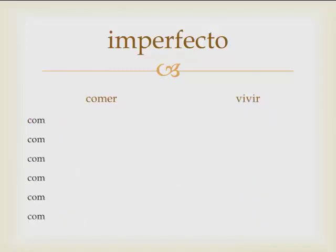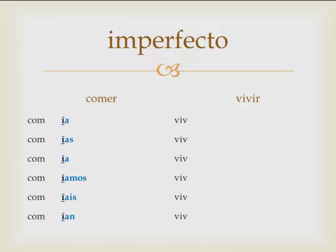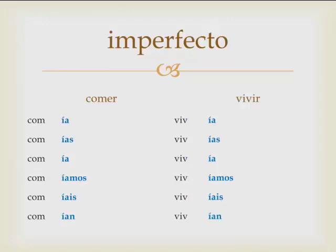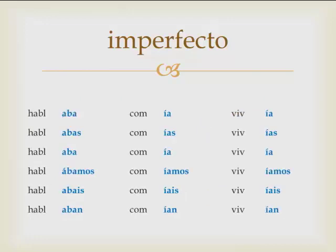Now let's look at the -ER and -IR endings. For comer, 'I used to eat' or 'I was eating,' the conjugation is: comía, comías, comía, comíamos, comíais, comían. The same set of endings applies to vivir: vivía, vivías, vivía — 'I was living' or 'I used to live.' Notice that the i carries an accent all the way down: ía, ías, ía, íamos, íais, ían. For -AR verbs the ending is aba; for -ER and -IR verbs it's ía. Ábamos has an accent over the first a, and ía has an accent over the i throughout.